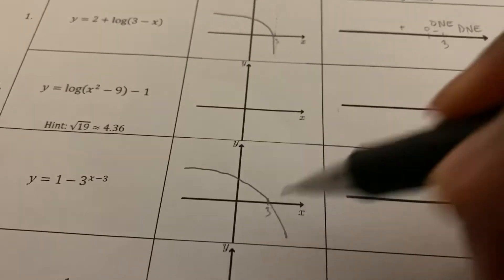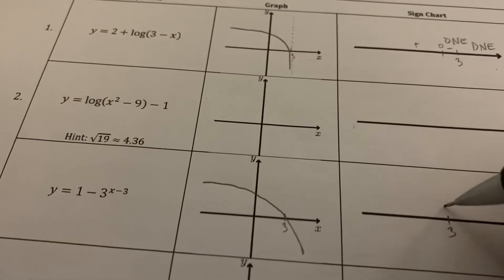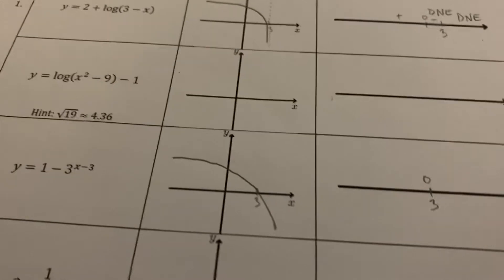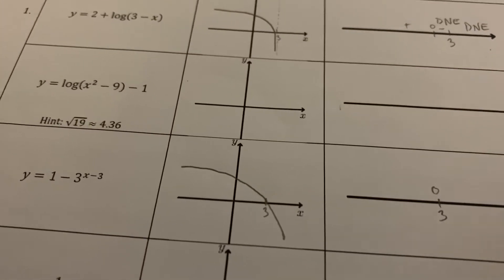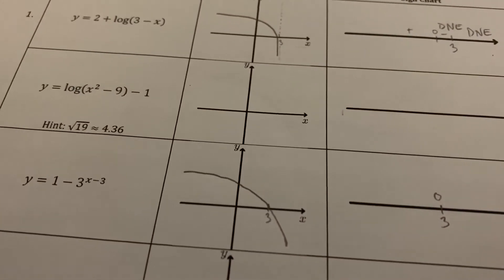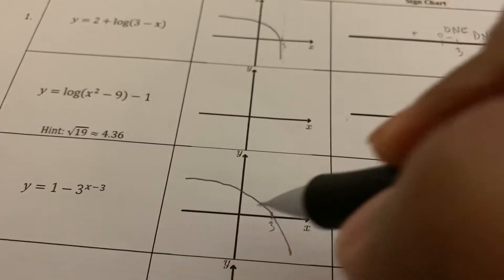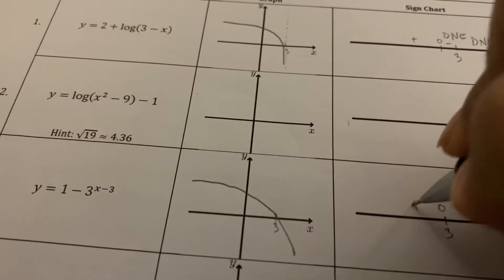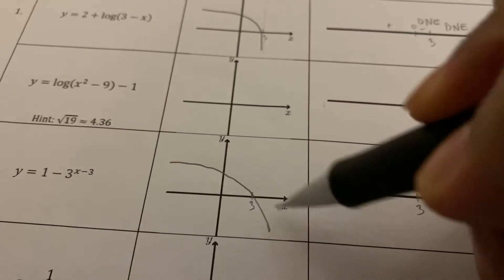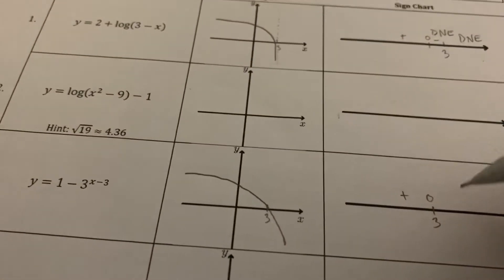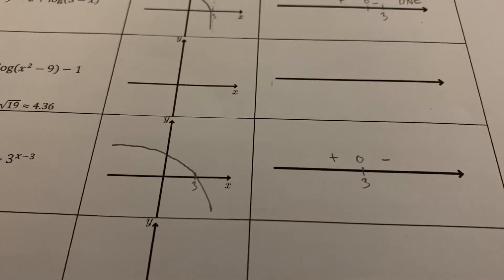The only key value here is three — that's the x-intercept, so its y-coordinate is zero. To the left of three, the graph is above the x-axis, which means it's positive. But to the right of three, it's below the x-axis, which means it's negative. And that's it.